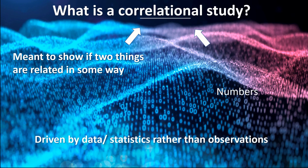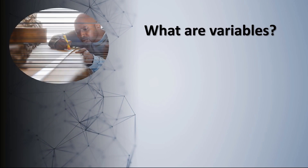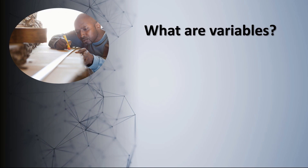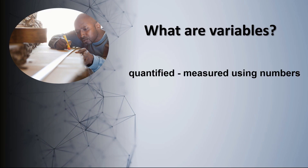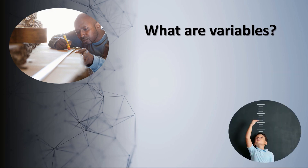Correlational studies measure variables. So, what exactly is a variable? A variable is something that can be measured — it can be quantified, or in other words, a number can be used to measure it. Something like height is a variable because I can measure and compare people's heights, say in inches or centimeters.